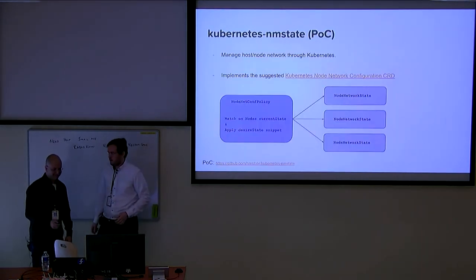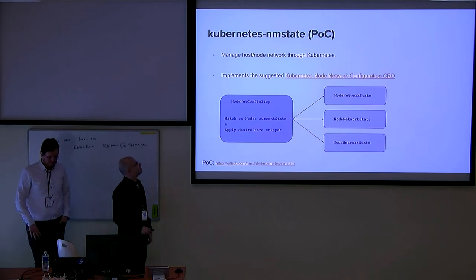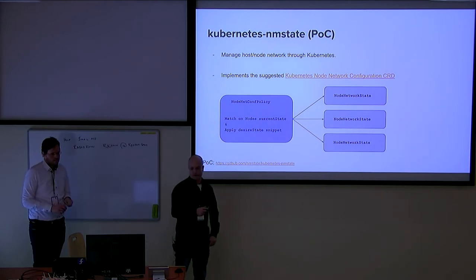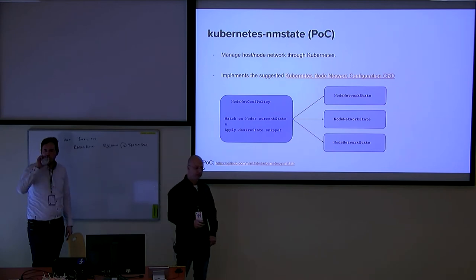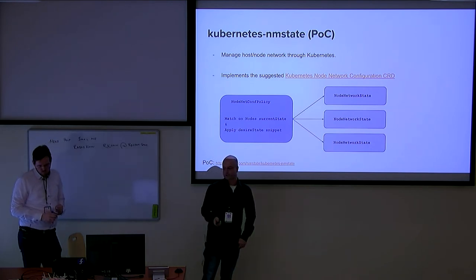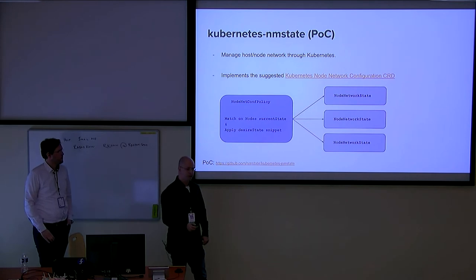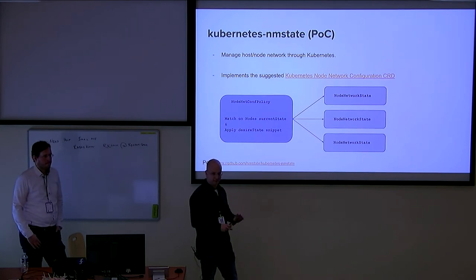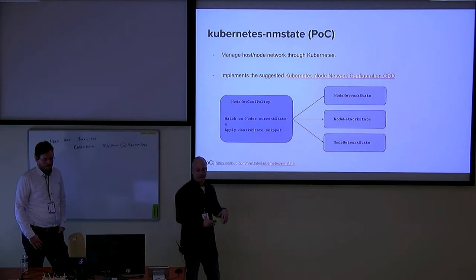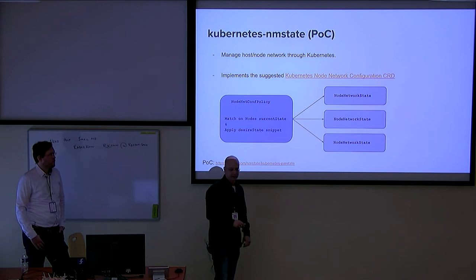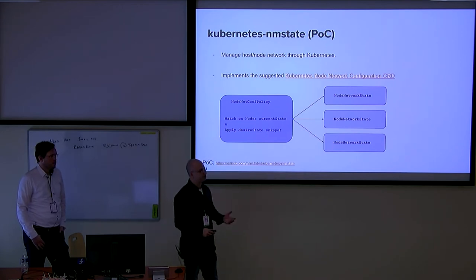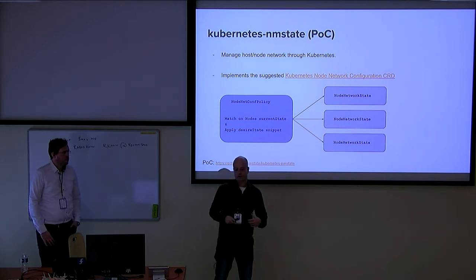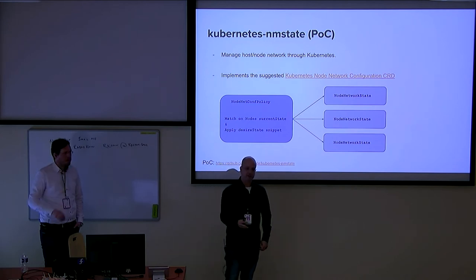Now I'll hand over again to Eddie, who will show another feature implemented with NM state. Does anyone here familiar with Kubernetes? We found out that NM state is also useful for allowing Kubernetes, or some extension of Kubernetes, to configure the networking on the nodes. Today Kubernetes is not interested in managing the node networking — they don't care if you have a bond or a bridge, they just want connectivity to exist and rely on someone else to do it. So this is a suggestion — a CRD that was presented in order to allow Kubernetes itself to define node networking through its own API, as an extension of it.